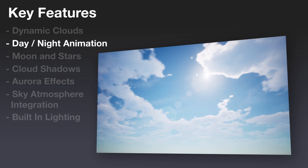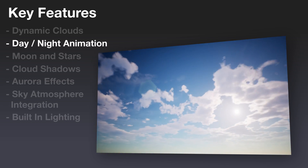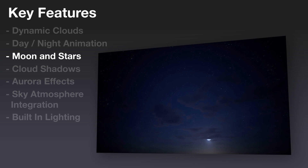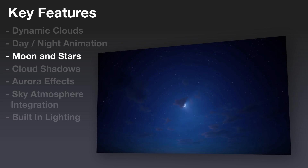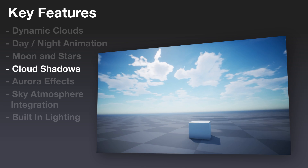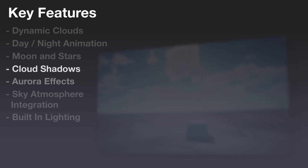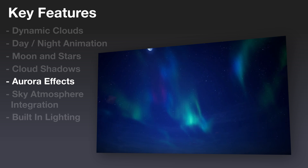The day and night animation system creates a complete dynamic time of day experience with a single click. The stars and the moon will come out at night. You can adjust things like their color and brightness, and you can even adjust the moon's phase. The sun and the moon can both project moving cloud shadows down onto your scene.